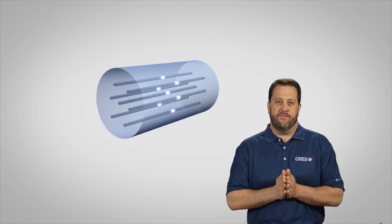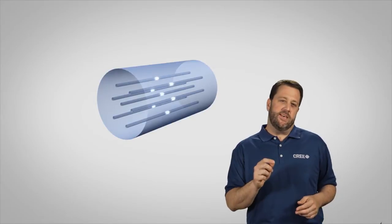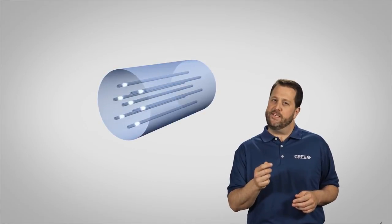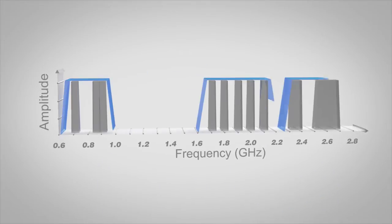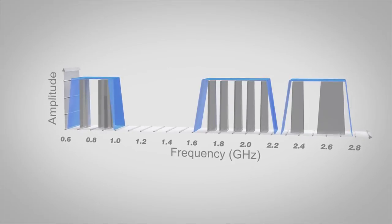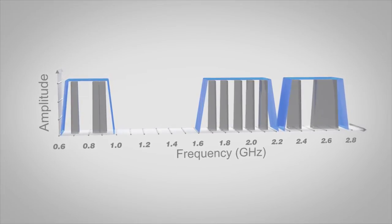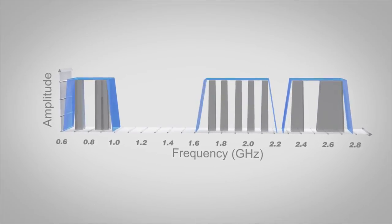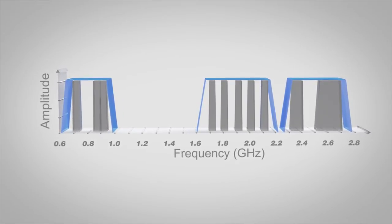Another significant feature is wide signal bandwidth. This feature enables a single GaN-based amplifier to process more traffic than a silicon-based amplifier by covering more frequencies. Here's an example. The black boxes indicate the frequency bandwidths that silicon-based power amplifiers can achieve today. The narrower signal bandwidth means the ecosystem has to develop, deploy, and maintain many different amplifiers to process all of the potential frequency bandwidths.